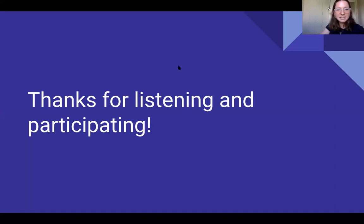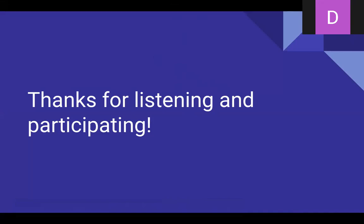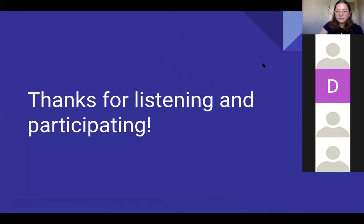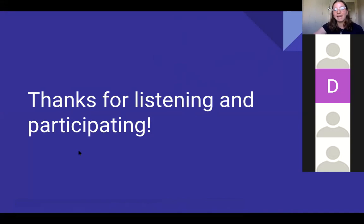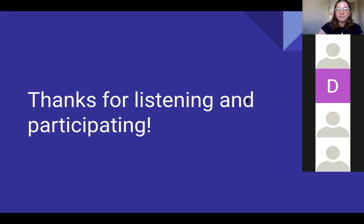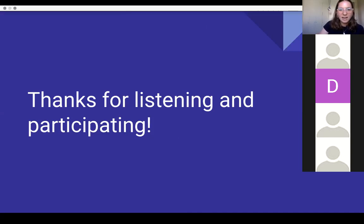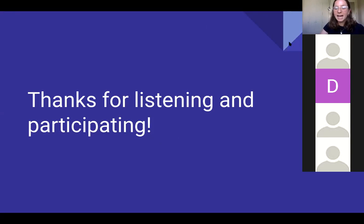A student asks why people urinate when nervous if urination is a parasympathetic response. The answer may relate to urination being a spinal cord reflex that can bypass conscious cortical modulation — during extreme stress, the conscious suppression may be overridden. The presenter encourages further questions via the email shown on the first slide and thanks everyone for participating.